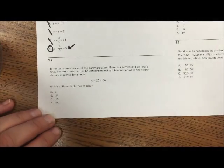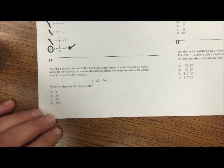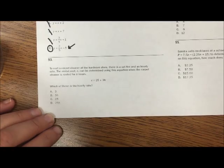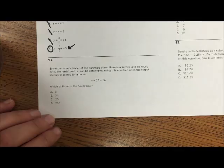Number 93. To rent a carpet cleaner at the hardware store, there's a set fee and an hourly rate. The rental cost C can be determined by using the equation when the carpet cleaner is rented for H hours. Which of these is the hourly rate?